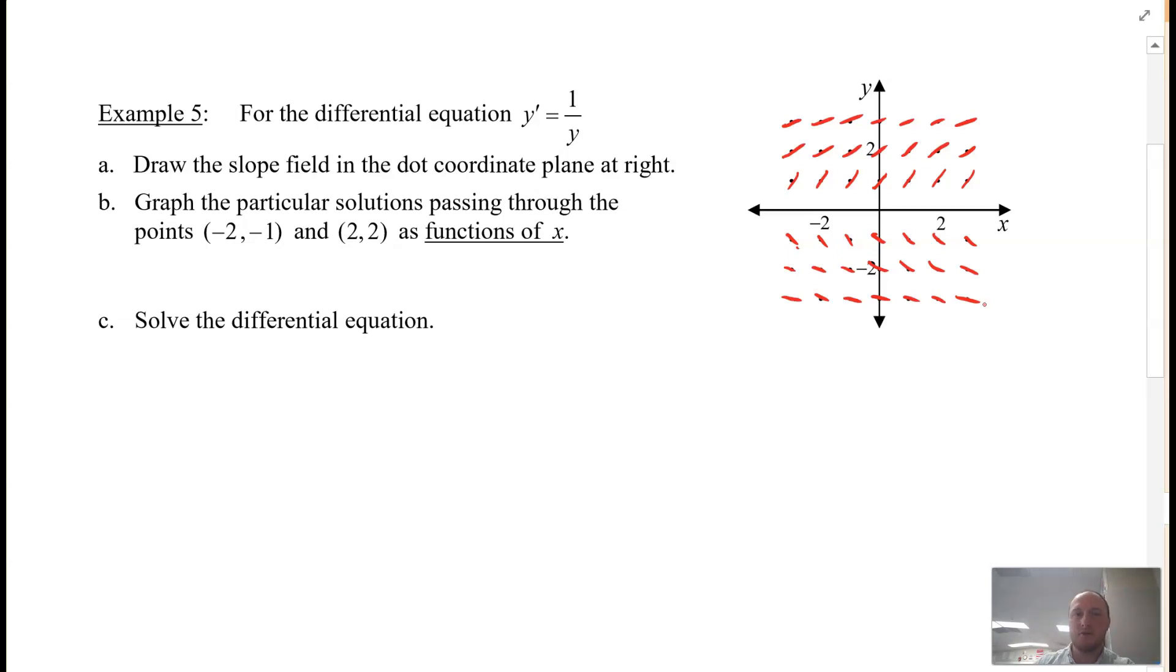Part B says graph the particular solutions passing through the points (-2, -1) and (2, 2) as functions of x. So that's this point here, this point here. I'm going to go ahead and be parallel to my slope, parallel to the slope field. So it looks something like this, and then coming up here, and we're non-differentiable at this. So it's going to be something that looks like this. And I'll go ahead and do the second one at 2, 2. So 2, 2 is here. So again, there's my function and non-differentiable at 0. And there's my function. Remember, it has to be a function, so you can't keep going. You don't want to do something that looks like this. That's not a function. It doesn't pass the vertical line test. So just keep that in mind.